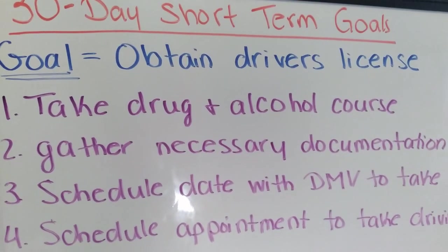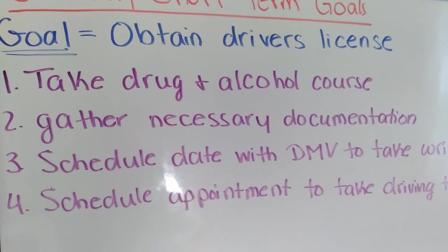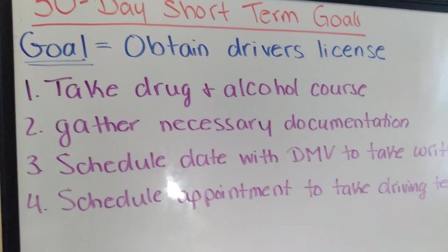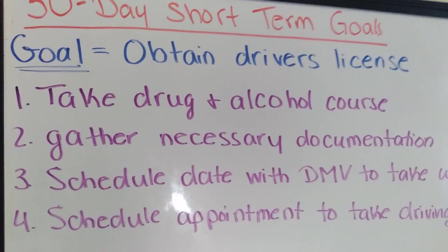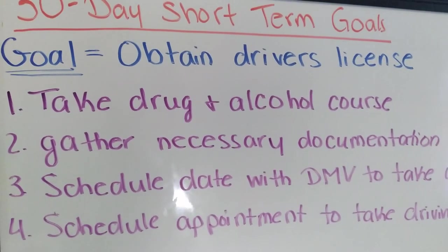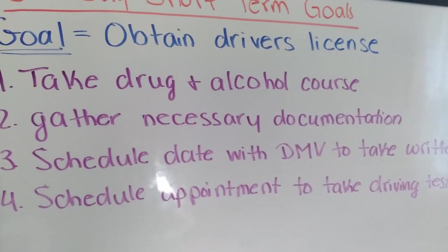Let's say, for example, your 30-day short-term goal is to obtain your driver's license. Then your four to five steps for that month would vary based on your state. But where I live, you need to take the drug and alcohol course, gather necessary documentation,